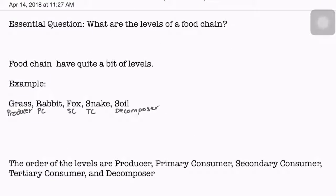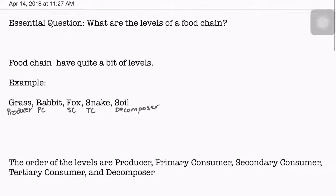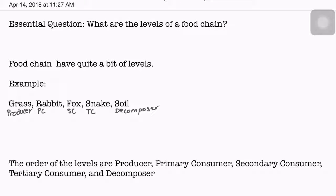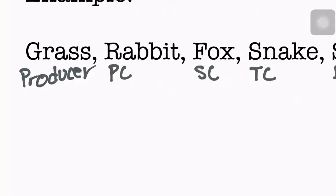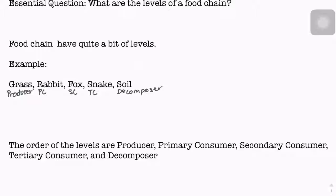Here's an example: grass, rabbit, fox, snake, and soil. The grass that makes its own food is the producer.